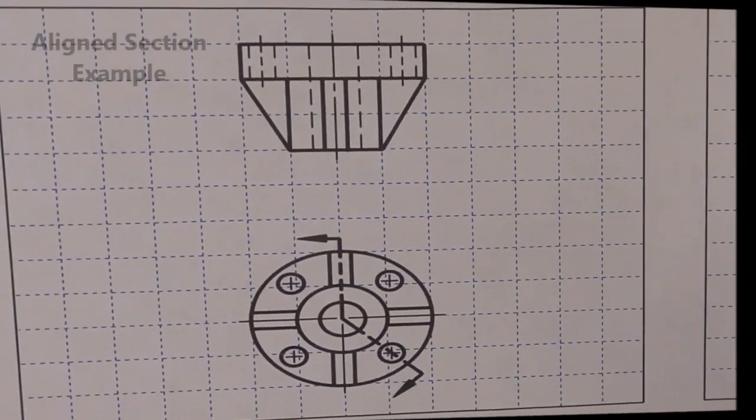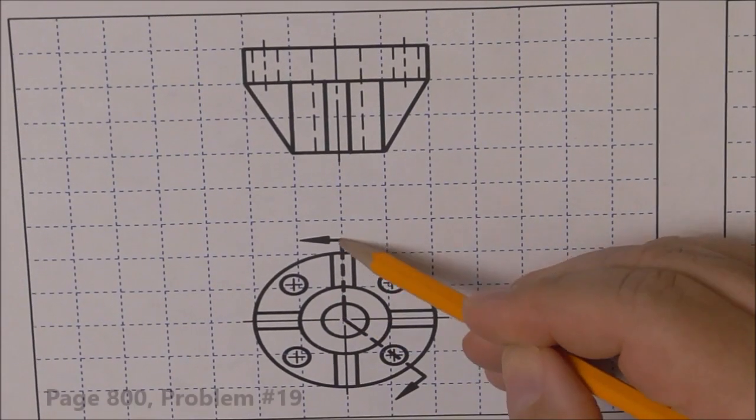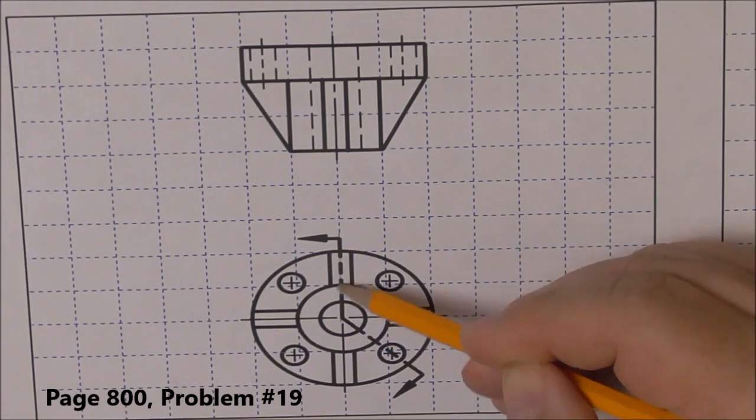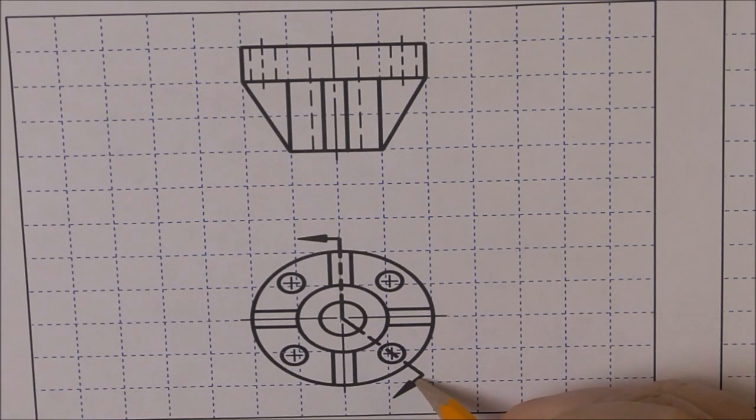So again, now this is a line section. We're cutting through here. One leg in a line section is always normal, it's always vertical or horizontal, and the other one is at some angle. We'll label this AA.